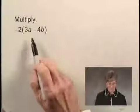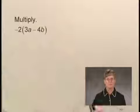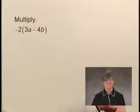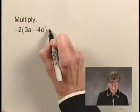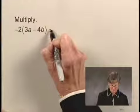We're going to multiply two expressions. We have negative 2 times 3a minus 4b, and we'll use the distributive law to do this.